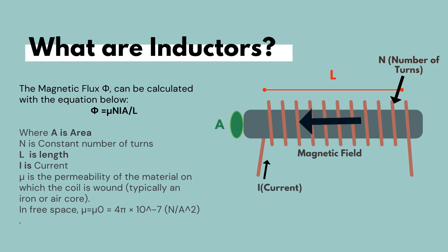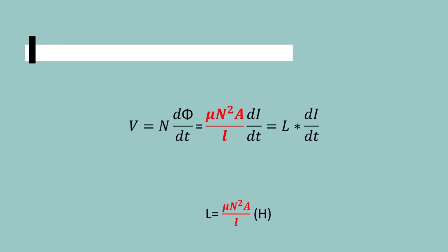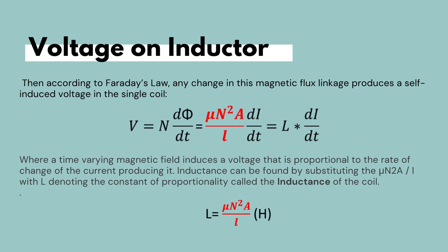The voltage on the inductor can be calculated according to Faraday's law by taking the change in magnetic flux, because any change in the magnetic flux produces a self-induced voltage. Taking the derivative of the magnetic flux into the number of turns gives us the voltage. We can see that a time-varying magnetic field induces a voltage that is proportional to the rate of change of current that produced the magnetic field in the first place.